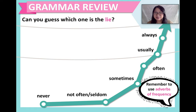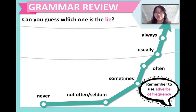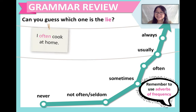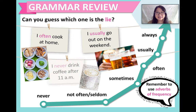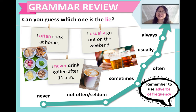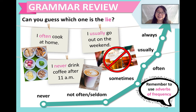We use adverbs of frequency to talk about how often we do something. Please take a look at our chart. At the bottom, we will never do something — that means zero times. Then we go up and up, and finally, always — something that we do all the time. I'm going to show you three sentences. One of these sentences is a lie. Can you guess which one? Number one: I often cook at home. Number two: I usually go out on the weekend. And number three: I never drink coffee after 11 a.m. The answer is number two. I actually seldom go out on the weekend — I usually have a lot of work to do, or I like to relax at home.